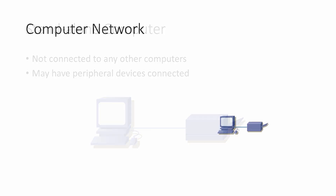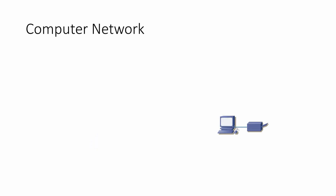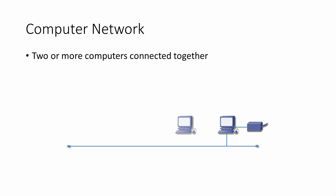We have a computer network when there are two or more computers connected together, usually with cables. Computers on a network are often referred to as workstations. This type of layout is called a bus. You can see that the bus has a main backbone cable, and the workstations are connected to this.